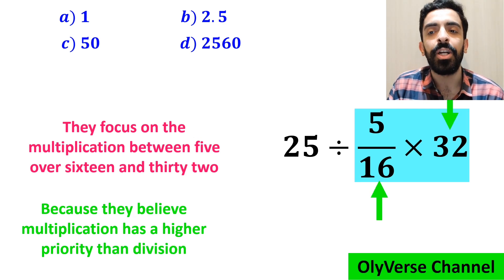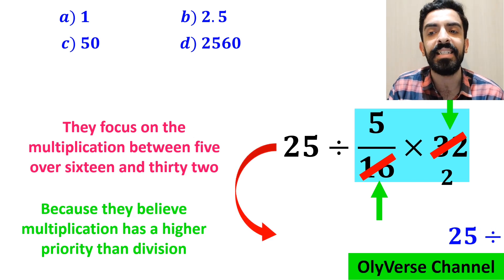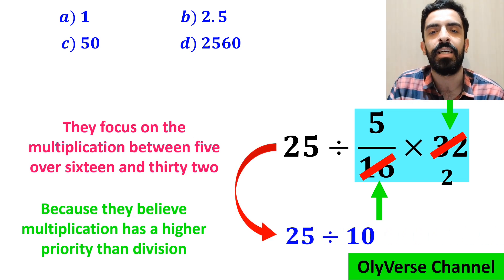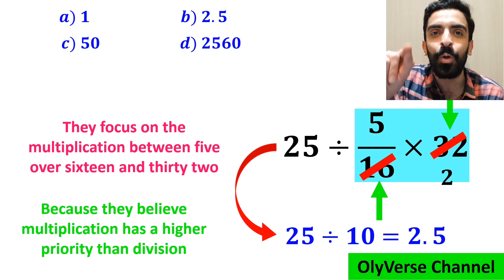As you can see in the image, they simply cancel out 32 with the 16 in the denominator, and this expression simplifies to 25 divided by 10, which finally gives them the answer 2.5.